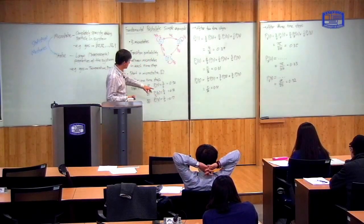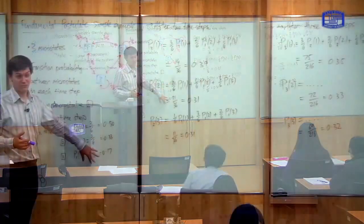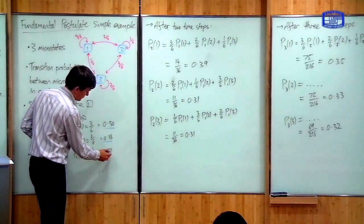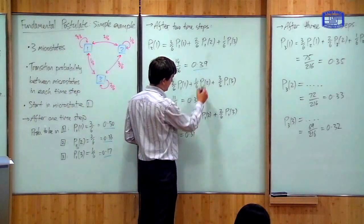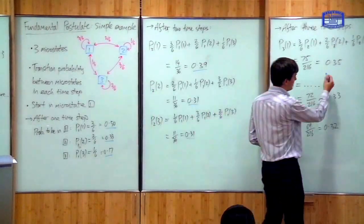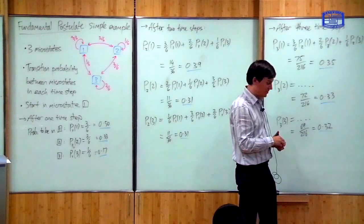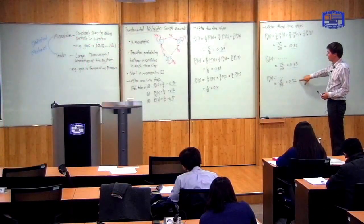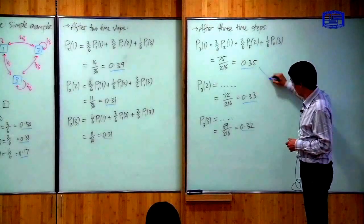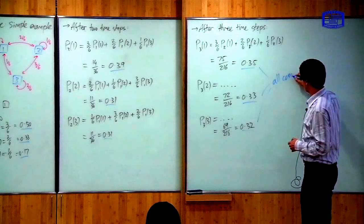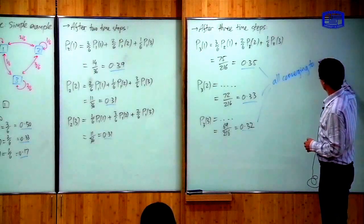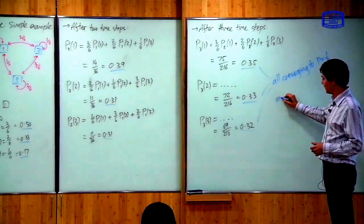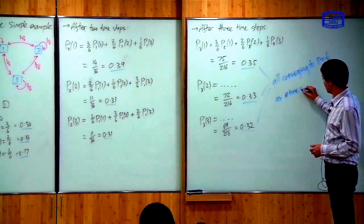The point I wanted to make here is to look at these probabilities. After one time step, they're all quite different — this one is three times more probable than this one. After two time steps, they get more similar. After three time steps, they get more similar again. And it's not too difficult to prove mathematically that if I do four, five, six, seven time steps, then these numbers will all converge to the same number. All of these probabilities are converging to 1/3 as the number of time steps increases.